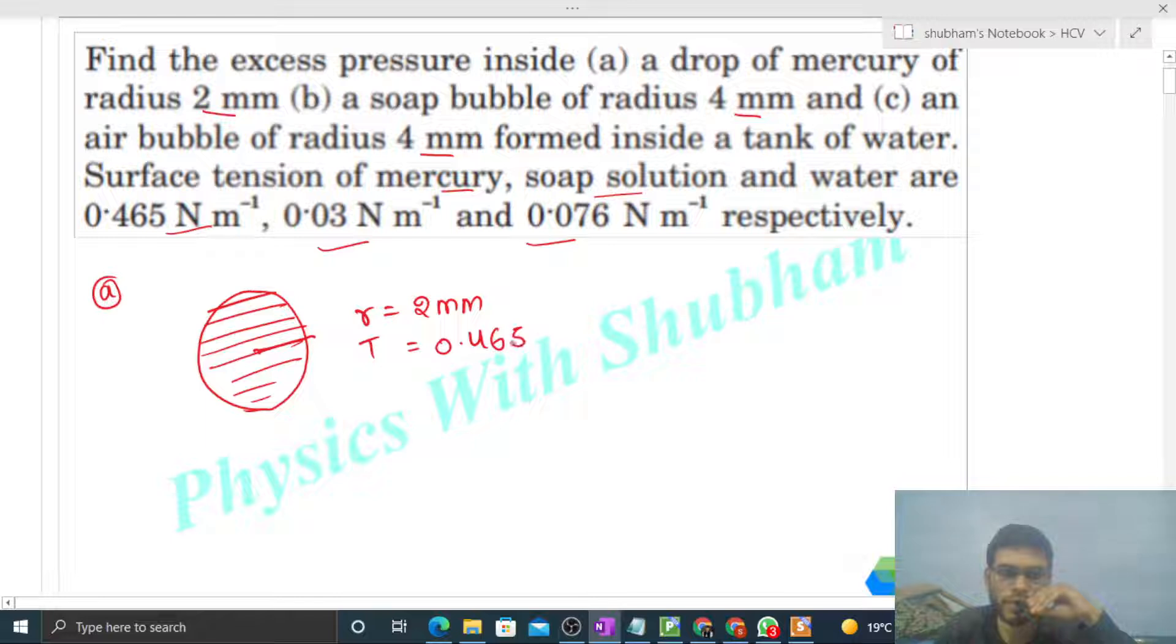So excess pressure inside a drop, that is equal to 2T divided by R. So just put the values: 2 into 0.465 divided by radius, that is 2 into 10 raised to the power minus 3.